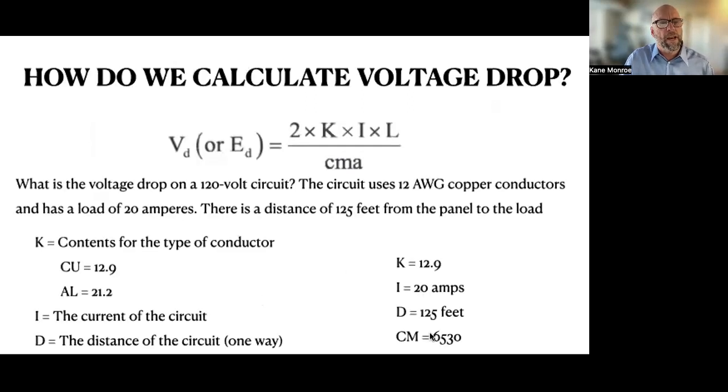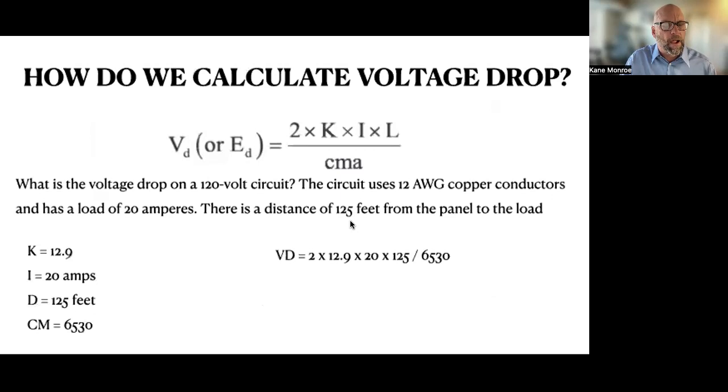So we plug that. We can plug 6530 into our formula. And it looks something like that. Two times K, which is 12.9 times 20, which is our current times 125, which is our distance, our length divided by 6530. So you multiply all that out, you get 64,500 divided by 6530.